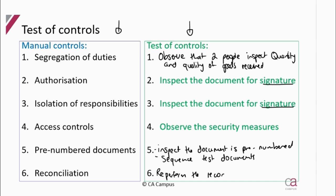You can re-perform whatever has been reconciled: the bank statement to the bank confirmation, the debtor statement to the debtor's ledger, the creditor's statement to the creditor's ledger, or the invoice to the delivery notes or goods received notes. Alternatively, if they produce a reconciliation document, you can inspect that document — for example, where they compare the amount per bank statement to the amount per bank GL.